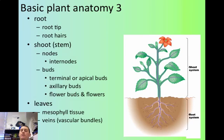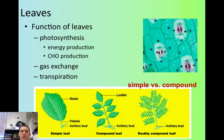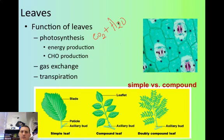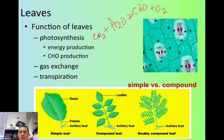Next we're going to talk about the leaves. The leaves are probably the most important part of a plant — without the leaves, the plant really can't survive. The function of leaves is to provide the plant with photosynthesis. If we remember from first semester, the skeleton reaction of photosynthesis is: they take in CO2, which humans give off, and they also need water. They combine CO2 and water to make a sugar — a carbohydrate — and then they give off oxygen. CO2 plus water makes glucose and oxygen. That's its energy and sugar production.